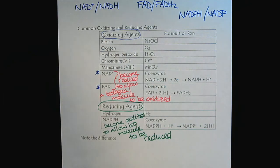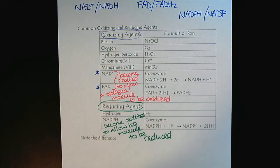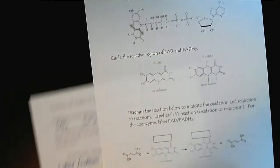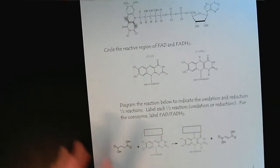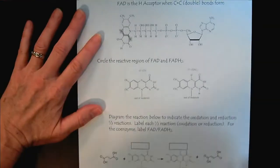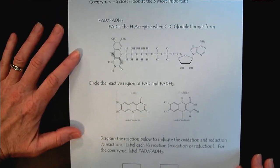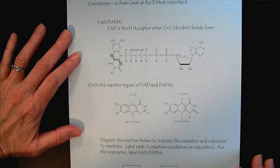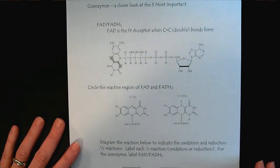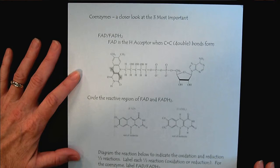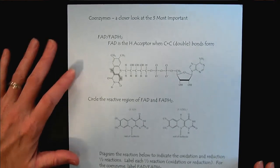Now that we have our basic concepts, let's go to the next page and take a closer look at the chemical structure of these coenzymes and see where we can spot the chemical changes. We'll start with FAD and FADH2.